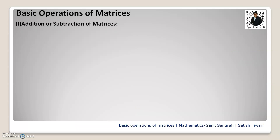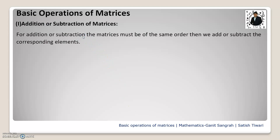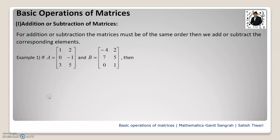First of all, we will start with the addition and subtraction of matrices. You have to note one thing: for addition or subtraction, the matrices must be of the same order, and then we add or subtract the corresponding elements. For example, matrix A has order 3 by 2 — 3 rows and 2 columns — and matrix B also has 3 rows and 2 columns, that is order 3 by 2. So the matrix order must be the same for addition and subtraction.